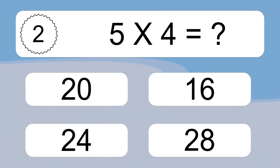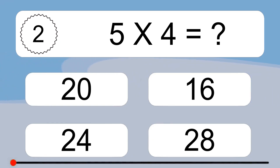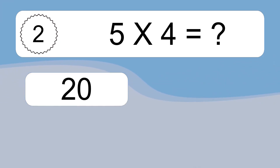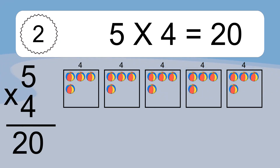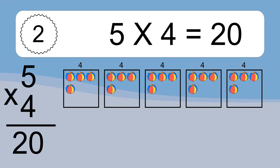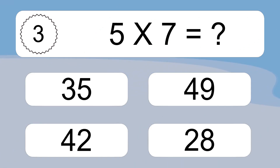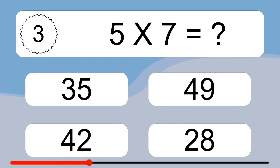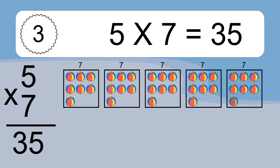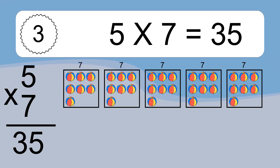5 times 4 equals what? 5 times 4 equals 20. We have 5 boxes, and each box has 4 colorful balls inside. If you count all the balls in all the boxes together, you will have 5 times 4 balls. This equals 20 balls. 5 times 7 equals what? 5 times 7 equals 35. We have 5 boxes, and each box has 7 colorful balls inside. If you count all the balls in all the boxes together, you will have 5 times 7 balls. This equals 35 balls.